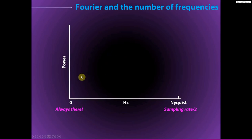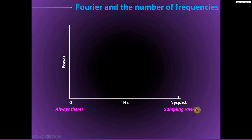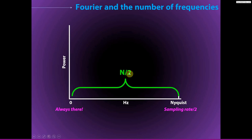Now we know the two extremes. Whenever we do a Fourier transform, we always have zero frequency as the lowest, and the Nyquist frequency — defined as the sampling rate divided by two — as the highest. The frequencies from just above zero up to the Nyquist give us our n over 2, and the DC component gives us the plus 1. That's how we get n over 2 plus 1 frequencies from the Fourier transform.